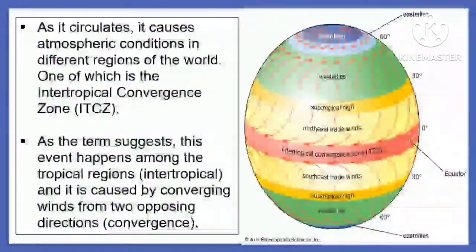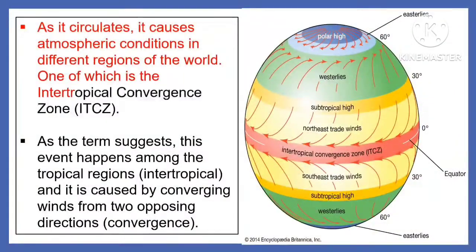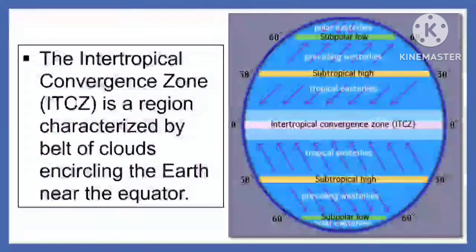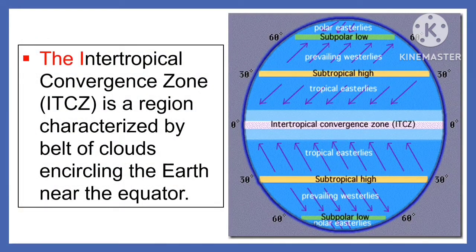As air circulates, it causes atmospheric conditions in different regions of the world, one of which is the Intertropical Convergence Zone or ITCZ. As the term suggests, this event happens among the tropical regions, and it is caused by converging winds from two opposing directions. The ITCZ is a region characterized by a belt of clouds encircling the Earth near the equator.